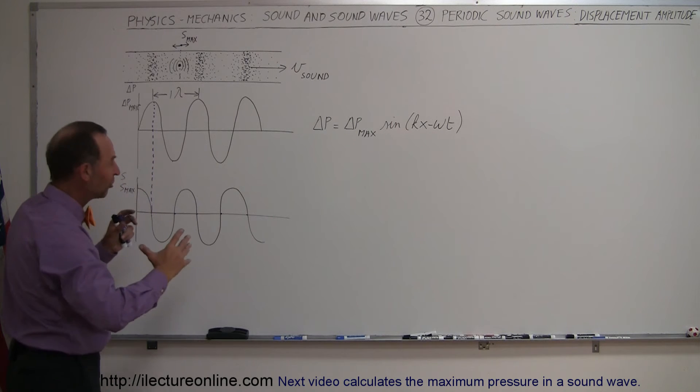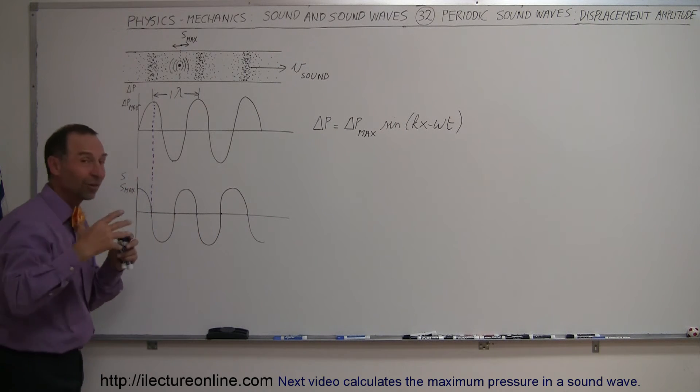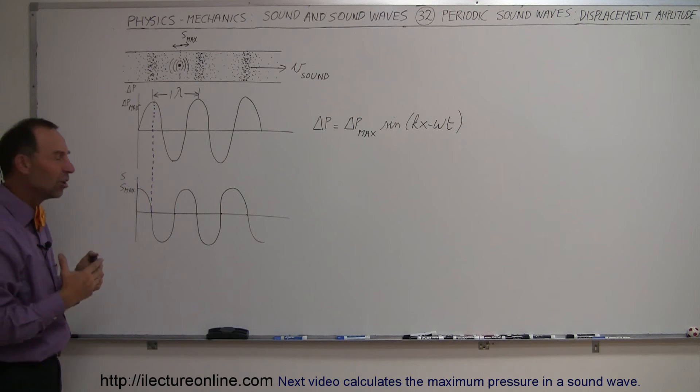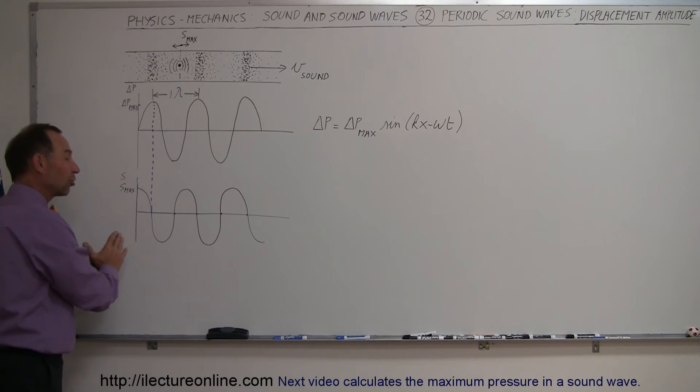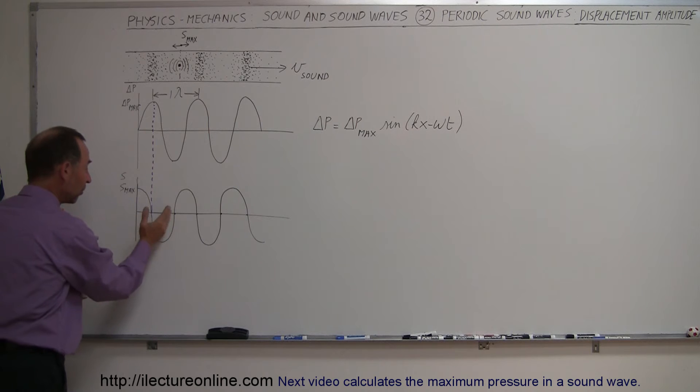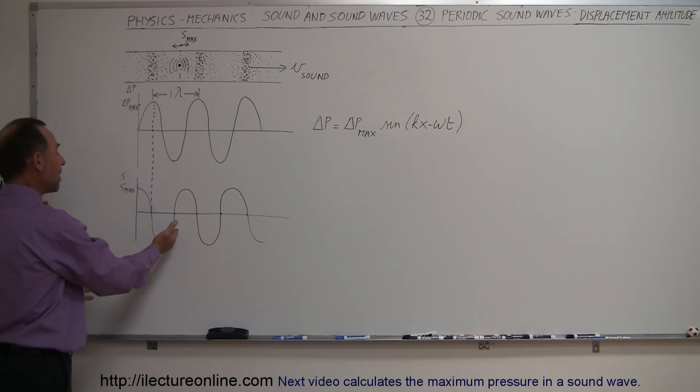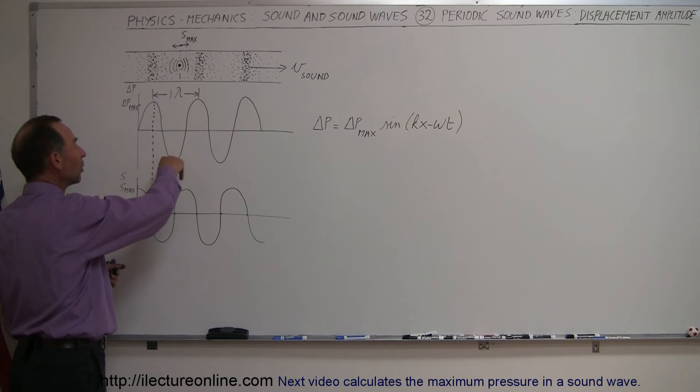Then as the pressure drops, then the molecules, because they have, it's kind of like kinetic and potential energy, as the pressure drops, they have this extra velocity in the opposite direction, so they now start building up lower pressure, because they're moving away from a region, so there's a rarefaction, so the molecules move away, move away, and so we have then a max displacement in the other direction, at the point where we start getting lower and lower pressure.